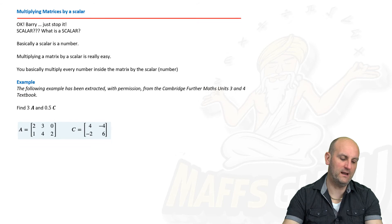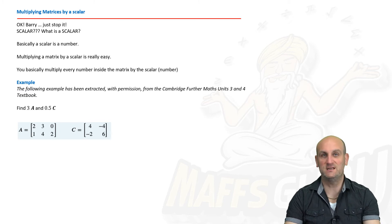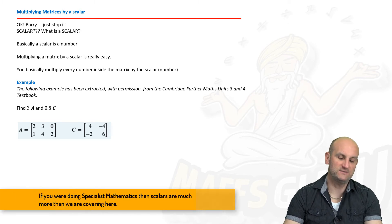Multiplying by a scalar. Now, Barry, Barry, Barry, Barry. Why can't you just say multiplying by a number? Scalar, nothing more than saying a number. Just leave it at that. Nothing more to worry about than that, really.